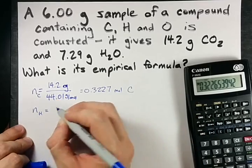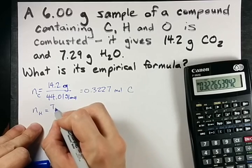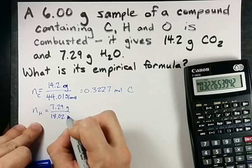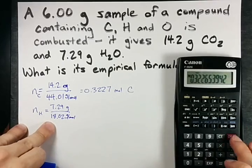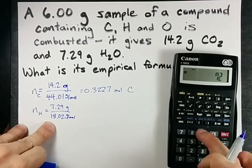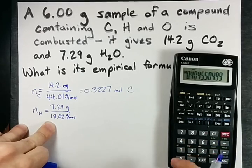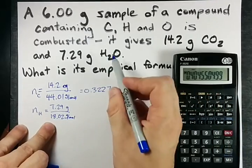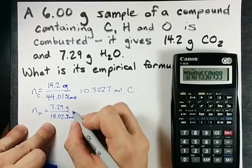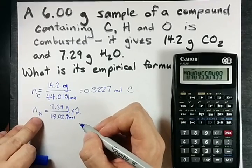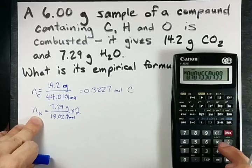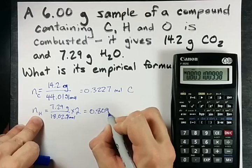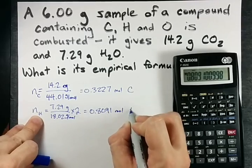How about for hydrogen? Well, we have 7.29 grams of water and water itself weighs or has a molar mass of 18.02 grams per mole. That's this many moles of water, but because we have two hydrogens per water, we need to double that in order to get the number of moles of hydrogen. So what I have is 0.8091 moles of hydrogen.